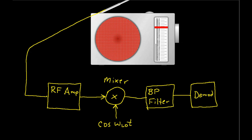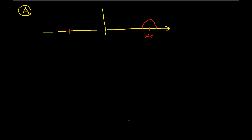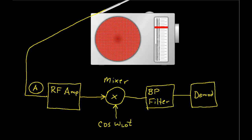Let's first look at the frequency domain representation of what's coming in from the antenna — I've labeled this point A in the system. In the frequency domain, out at ωc is the information that I want, and this is also at minus ωc. But I also have all these signals from the other radio stations that my antenna picks up. The issue is that I don't want to listen to all this other stuff — I want to listen to the one station that I tuned into, and that's at ωc.